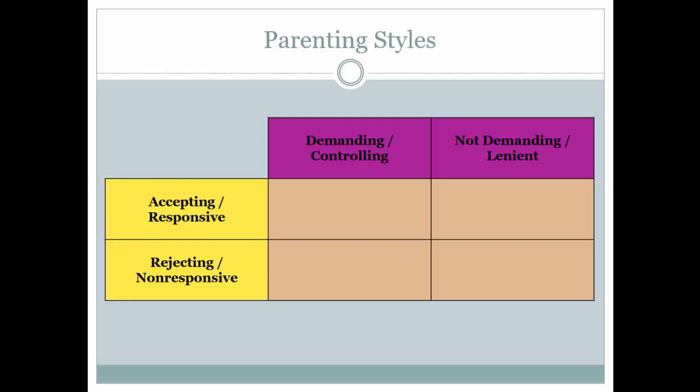Parents who are high in demand or control — you might think of them as strict parents — but who are also high on the accepting and responsive domain, we call those parents authoritative. Authoritative parenting is a blend of having really high standards and setting the bar high for your kids in terms of behavior and goals and achievement, while also being very warm, accepting, and encouraging.